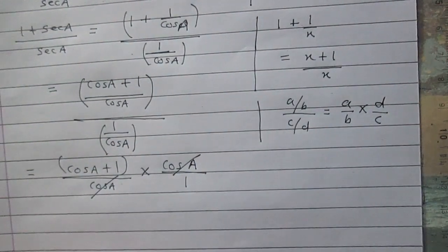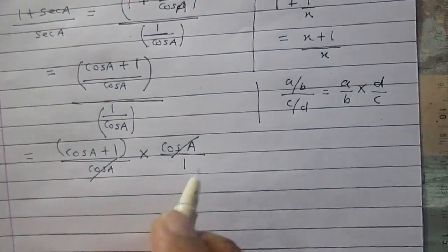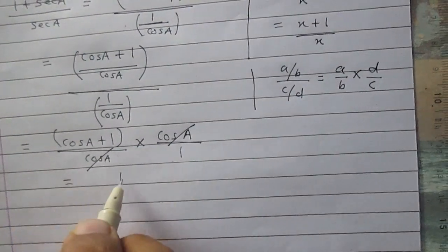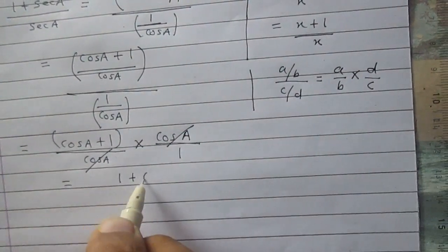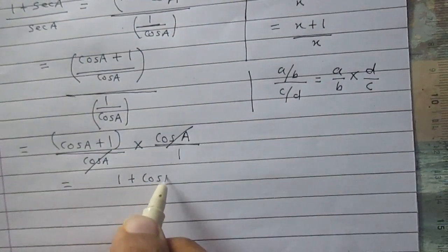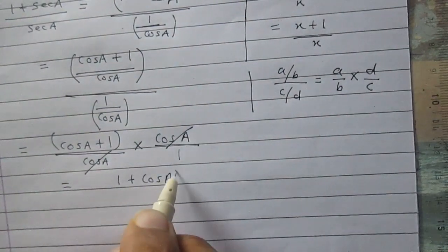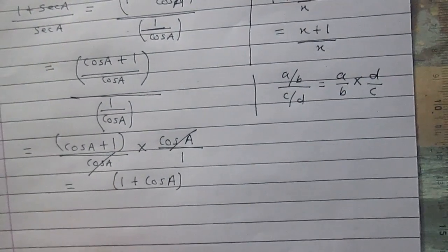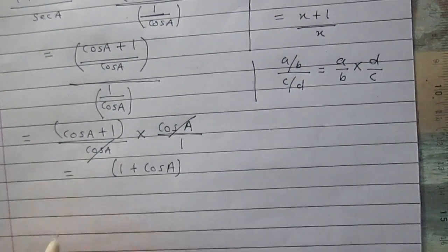The two cos a terms cancel. So the left hand side simplifies to 1 plus cos a. Now let us consider the right hand side.